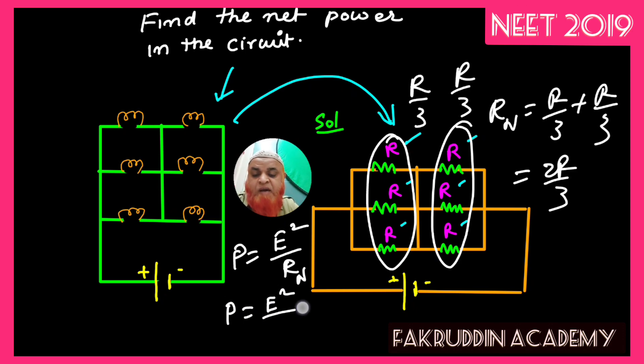So power is equal to E squared divided by R_net, which is 2R/3. So we can write 2R in the denominator and 3 in the numerator. Therefore, this is going to be your answer.